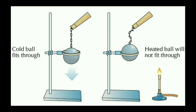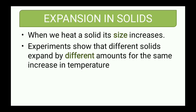To show the effect of expansion we can perform an experiment in the laboratory using the ring and ball apparatus. It consists of a metal ring and a metal ball. At normal temperature, the ball passes through the ring. But when heated, the ball will not pass through the ring, because heating causes expansion of the ball. We conclude that when we heat a substance, its size increases due to moving molecules.